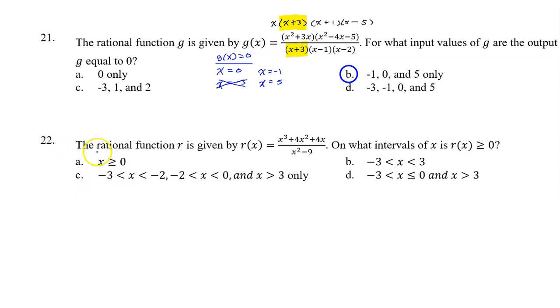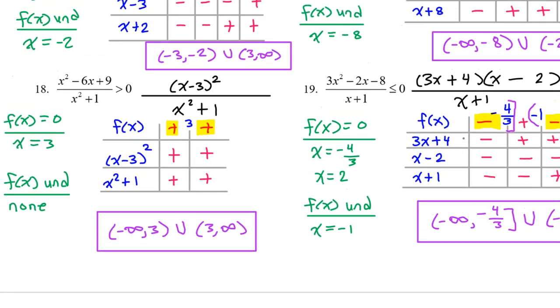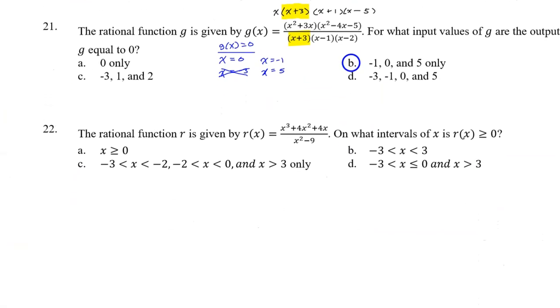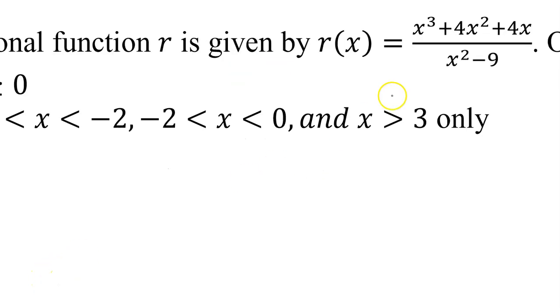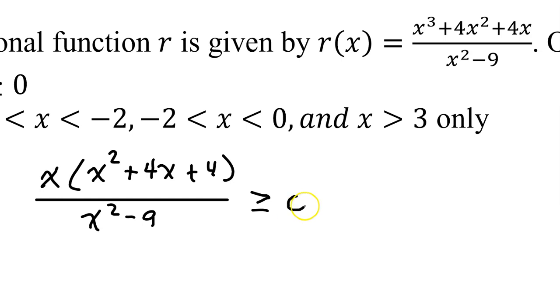Last one, number 22. The rational function R is given by R of X equals this expression. On what intervals of X is R of X greater than or equal to zero? All right, this is just like the many problems that we did up here. But first we have some factoring to do. Every term in the numerator has an X in it. So let's start by factoring out the X. So that's going to leave behind X squared plus 4X plus 4 over X squared minus 9. And we are looking for where R of X is greater than or equal to zero. This will factor further.